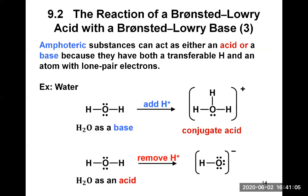Water can also act as an acid by donating a proton. Remove an H+ from H2O: one of the single bonds becomes a lone pair, and because the hydrogen leaves without any electrons, there is an extra electron leftover — giving OH-. OH- is the conjugate base of water when water acts as an acid. So H3O+ and OH- are the hydronium and hydroxide ions — the conjugate acid and conjugate base of water, depending on whether water acts as an acid or a base.